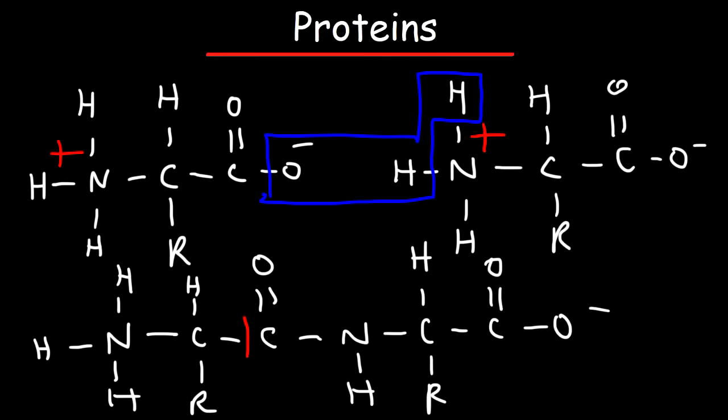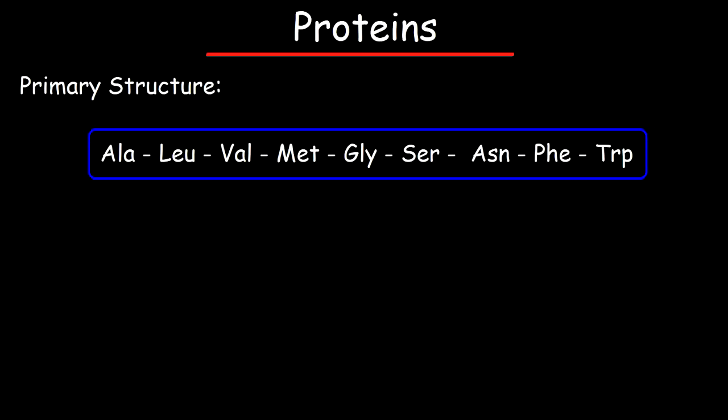We formed a bond between the carbon and the nitrogen atom. So whenever you combine two amino acids to form a peptide bond you're forming a covalent bond which is hard to break. Now let's talk about the different levels of protein structure. There's four levels that you need to know.